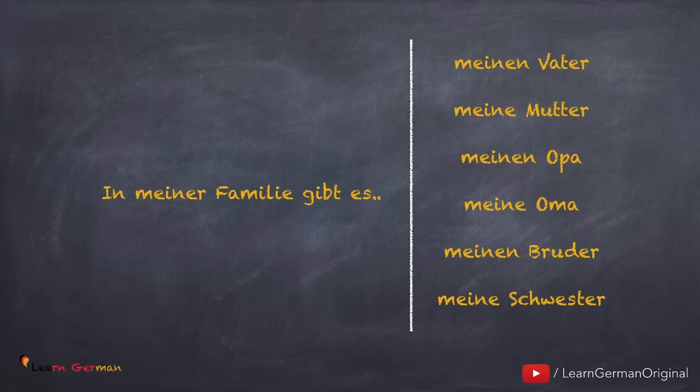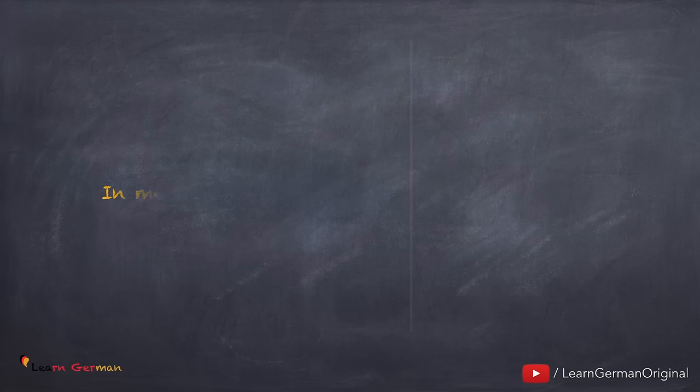In meiner Familie gibt es meinen Vater, meine Mutter, meinen Opa, meine Oma, meinen Bruder und meine Schwester. Don't forget to use the accusative article for masculine nouns such as Vater, Opa, Bruder. If you want to revise the accusative article you can watch our video on the accusative case.